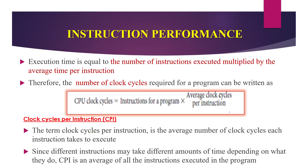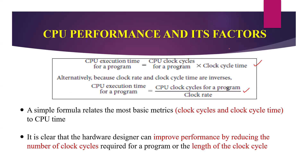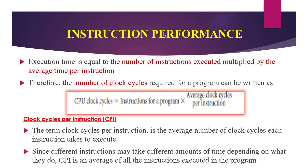The third and fourth parameter is called instruction performance. Instruction performance is how to execute one instruction. Execution time equals the number of instructions executed multiplied by the average time per instruction. Therefore, the number of clock cycles required for a program can be written as: CPU clock cycles equals instructions per program multiplied by the average clock cycles per instruction, which is CPI — clock cycles per instruction. CPI tells us how many clock cycles are required to execute one instruction.